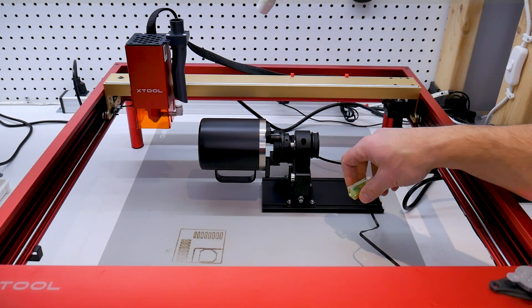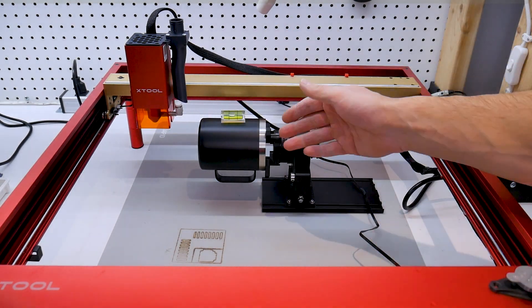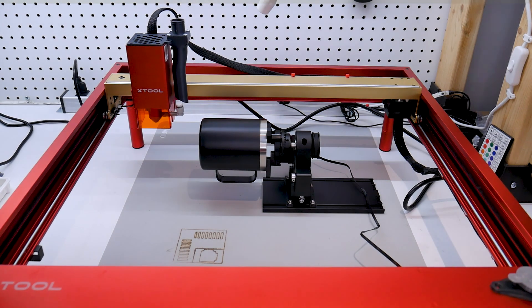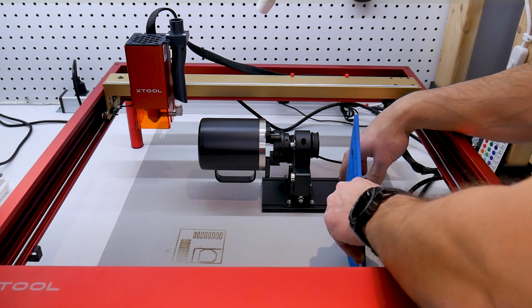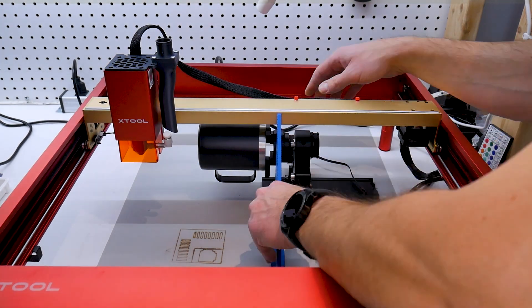In a previous video I went into great detail explaining the setup and use of the RA2 rotary attachment with the Xtool D1. If you're looking for that video I'll put a link in the top right hand corner of the screen.